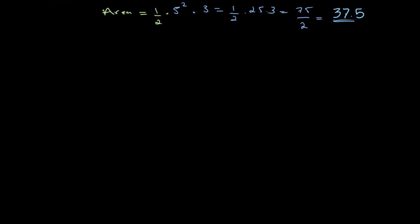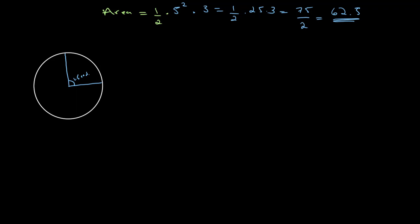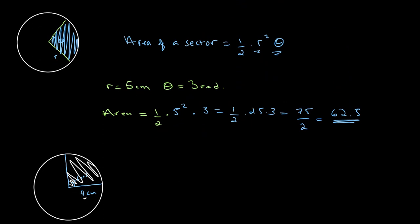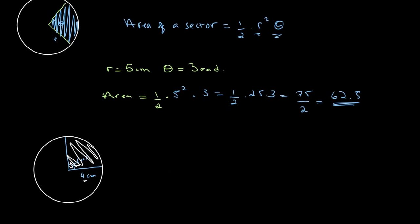Let's try another example. We have a circle with a radius of 4 centimeters and a sector with an angle, theta, of 1.5 radians. We want to find the area of the shaded region. This is asking us to solve for the area of the sector. We know the radius is 4 centimeters and the angle is 1.5 radians, so we can simply plug those into our equation.